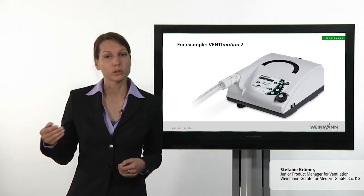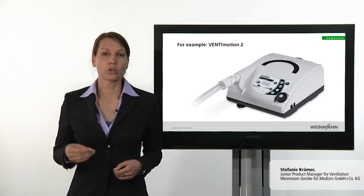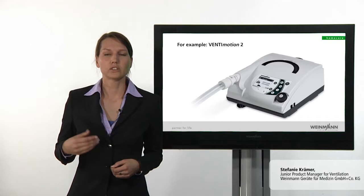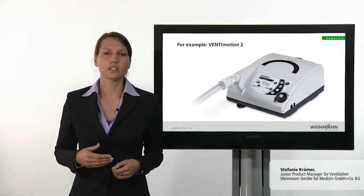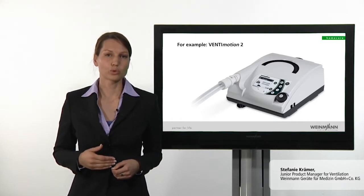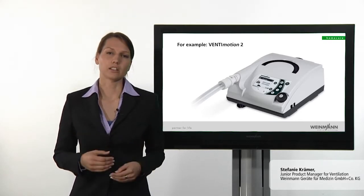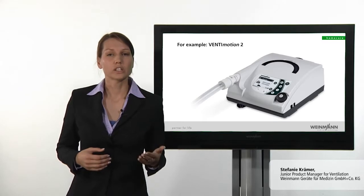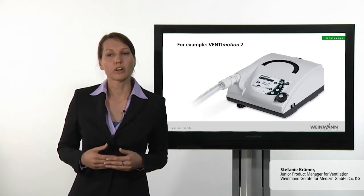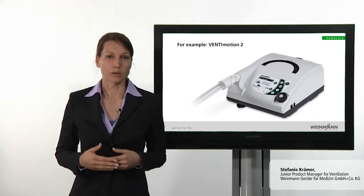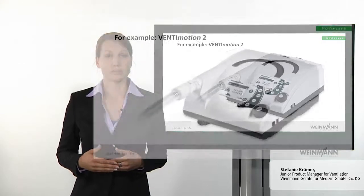Firstly, a high inspiratory pressure to support inhalation. This is especially necessary due to the obstruction and feels extremely pleasant for the patient. Moreover, a gradual drop in pressure should be set to prevent a bronchial collapse.